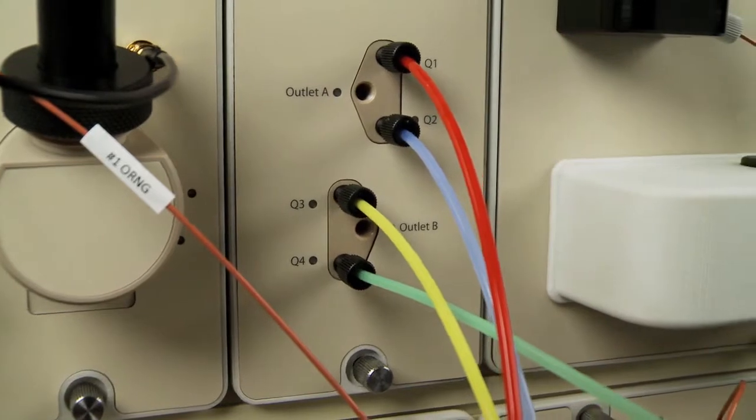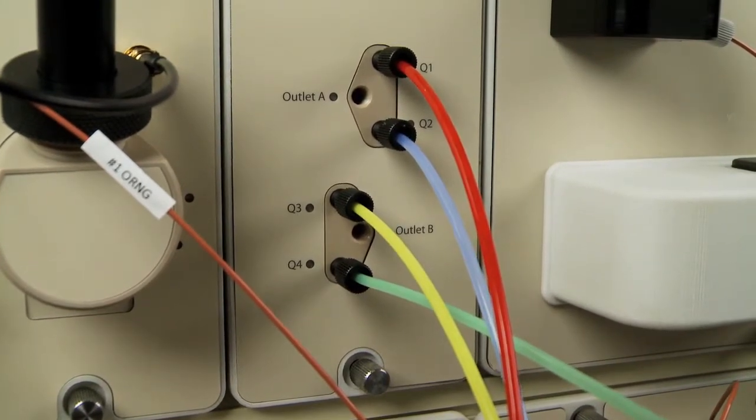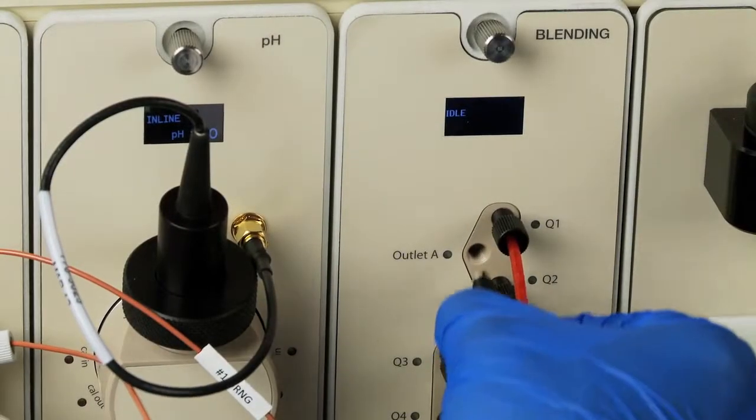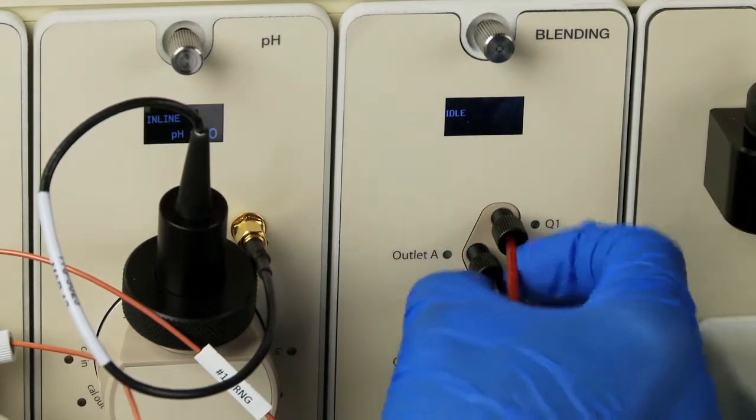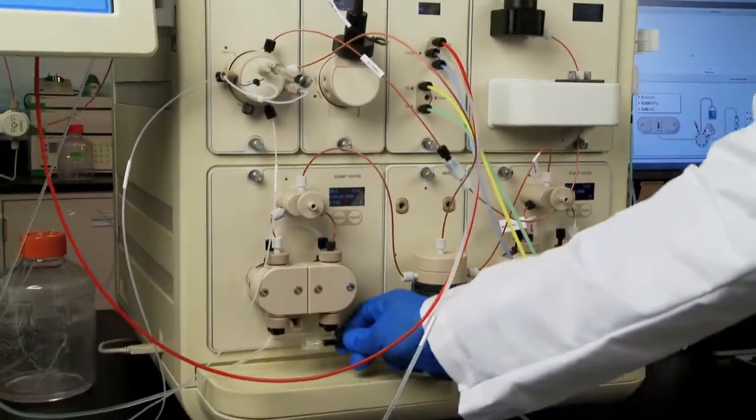Note the buffer inlet lines are color coded based on the solution that they represent. Refer to the NGC installation guide for more details. Next, attach line Q outlet to port A on the buffer blending valve and then attach the other end to the inlet manifold on pump A.